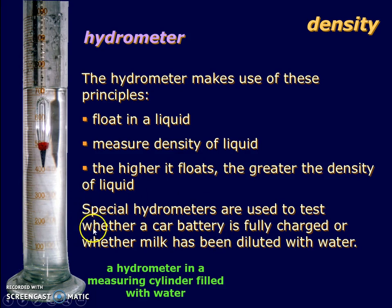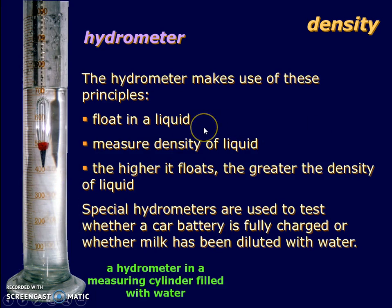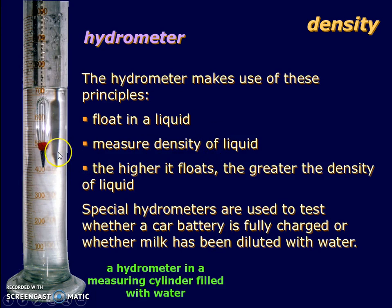This instrument is known as a hydrometer. It makes use of the principle of flotation in liquid to measure density. Basically, the higher it floats, the greater the density of the liquid.